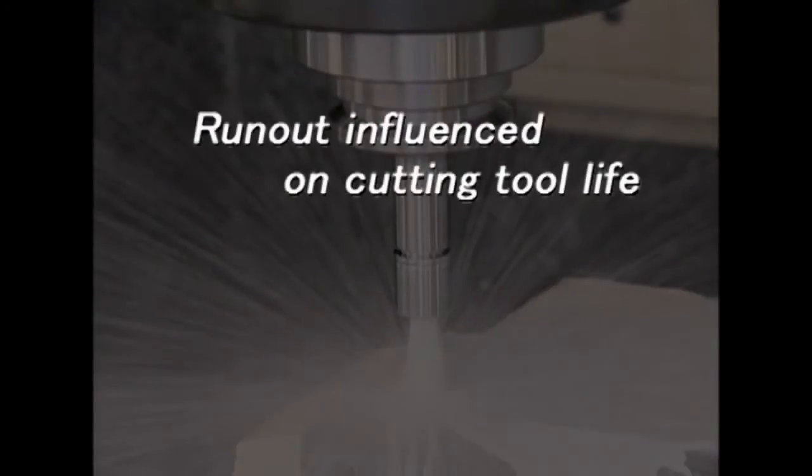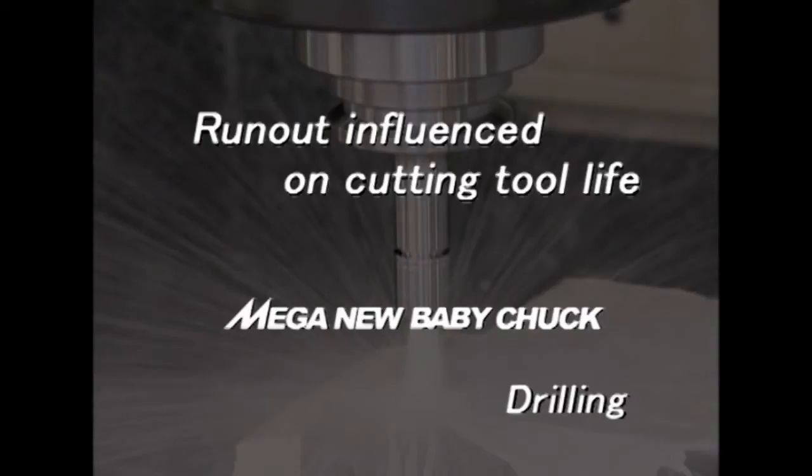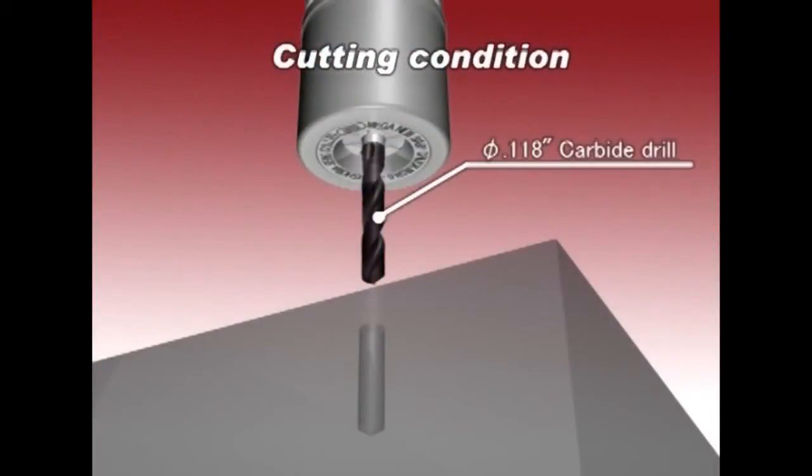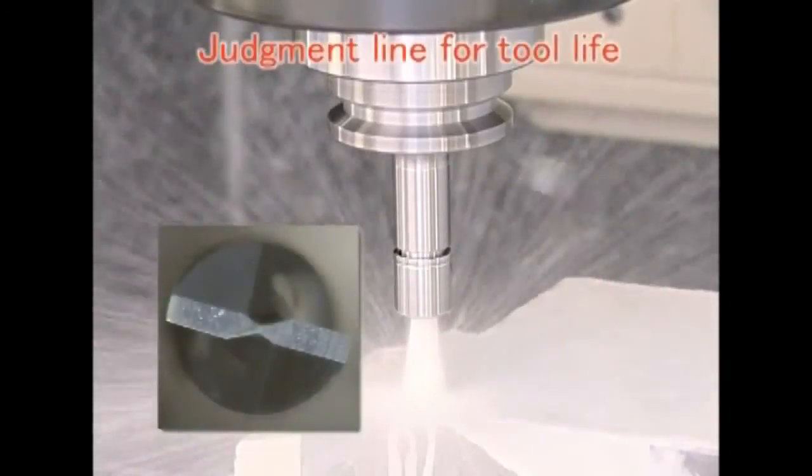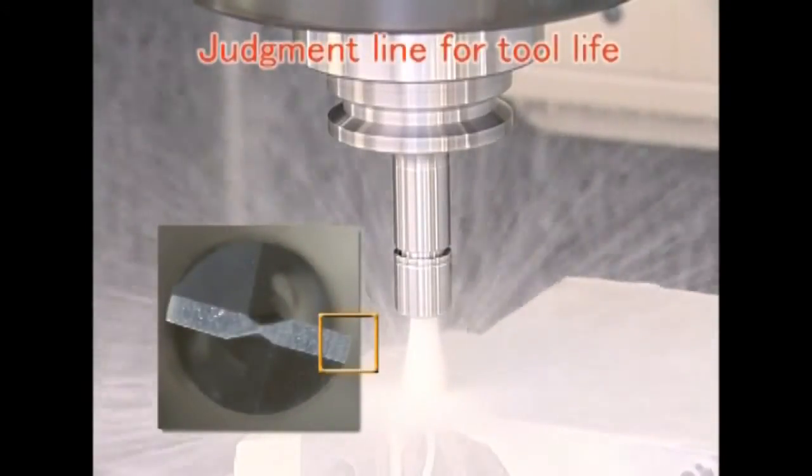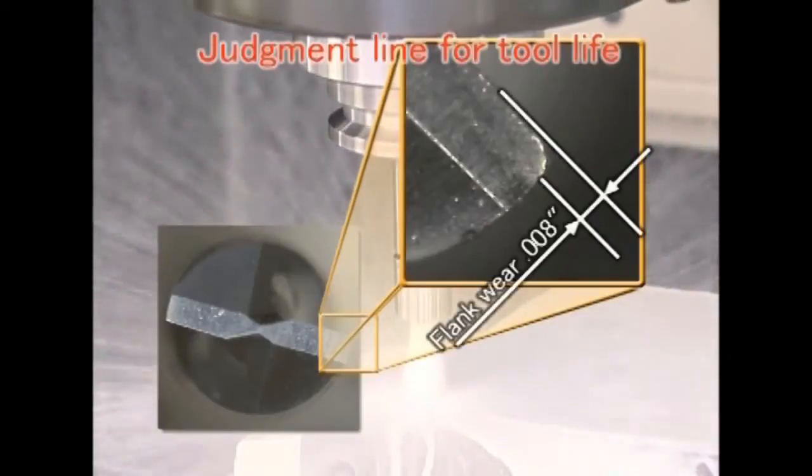Let us show you how run-out accuracy influences tool life in a drilling operation. Using a 118 thousandths carbide drill, cutting 472 thousandths deep into ANSI 1055 steel, tool life is considered over when the wear width of the relief angle measures 8,000.